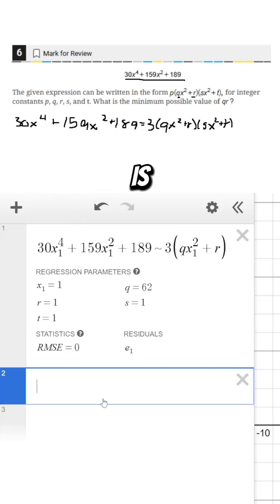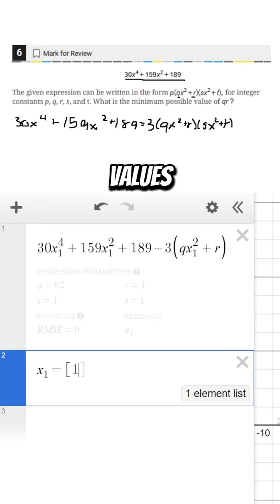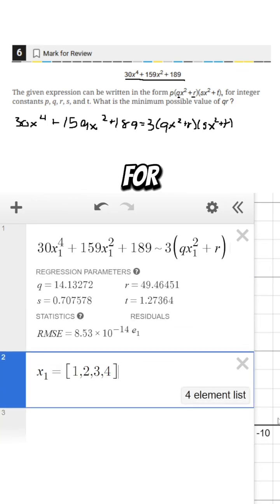Now all I need to do is first set x1 equal to a list of different values so that we can be sure that this will be true for all values of x and then ask myself what are the combinations of q and s that are going to be possible?